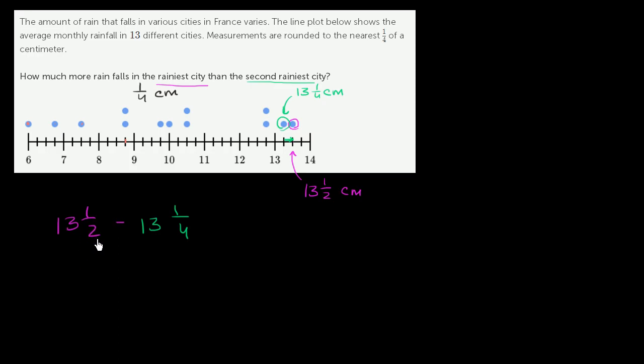So 13 and 1/2 is the same thing as 2 times 13 is 26, plus 1 is 27. So that's 27 over 2.